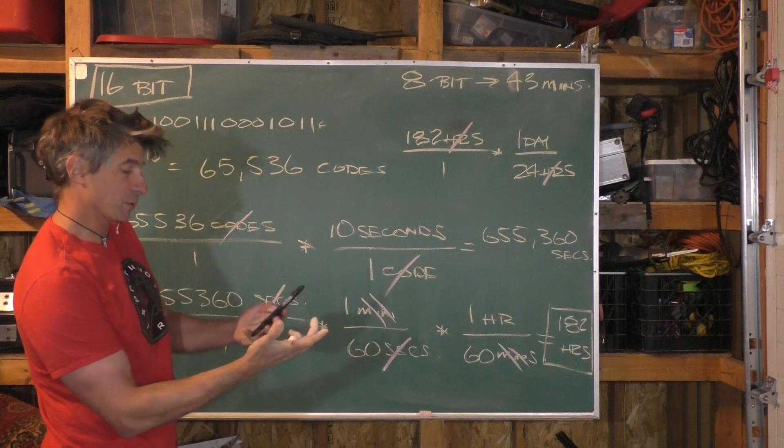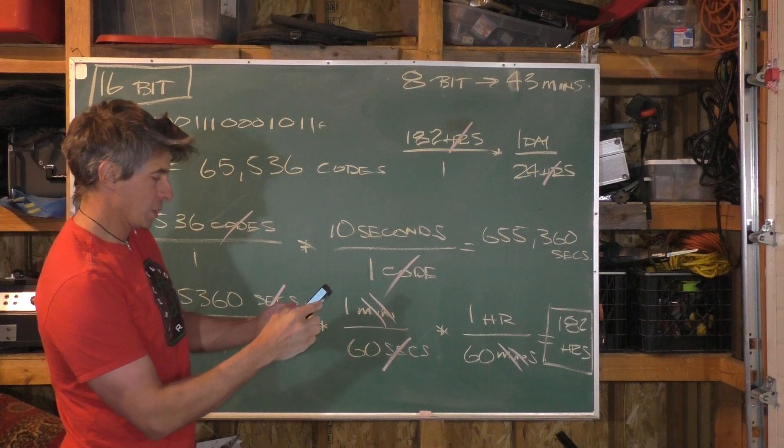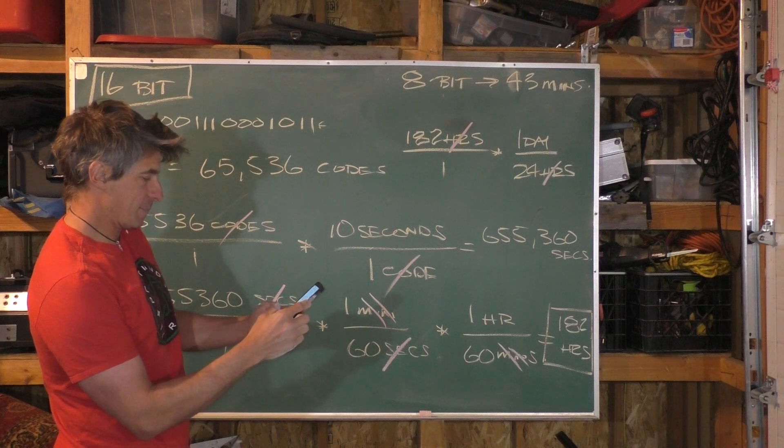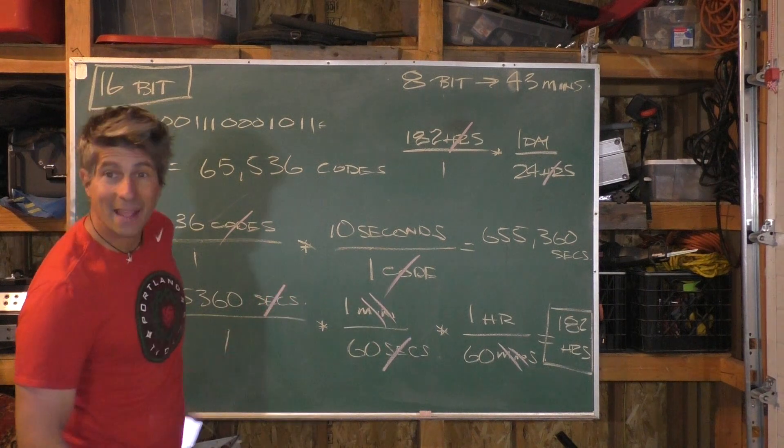I can't do this in my head. If it were 25 I could, 182 divide by 24, we get about seven and a half days, 7.6 days.